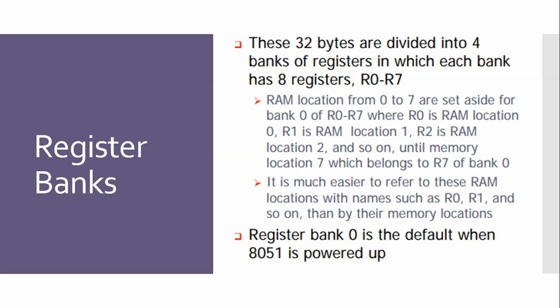These 32 bytes are divided into four banks of registers, where each bank has 8 registers: R0 to R7. RAM locations 0 to 7 are set aside for bank 0, where R0 is RAM location 0, R1 is RAM location 1, R2 is RAM location 2, and so on up to RAM location 7 which belongs to R7 of bank 0.